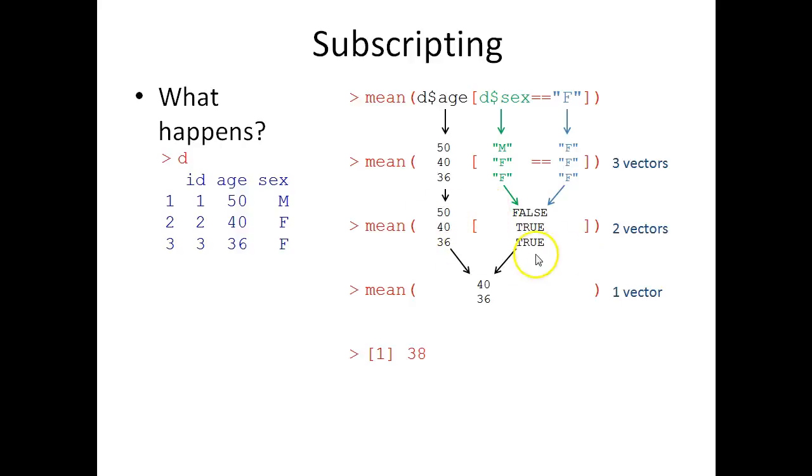So this part of the code then returns a vector of length two, containing the elements 40 and 36, which are the ages of the two individuals that are female sex. And lastly, R takes the command mean and applies it to this vector of length two, 40 and 36, and returns 38, which is the mean of these two.